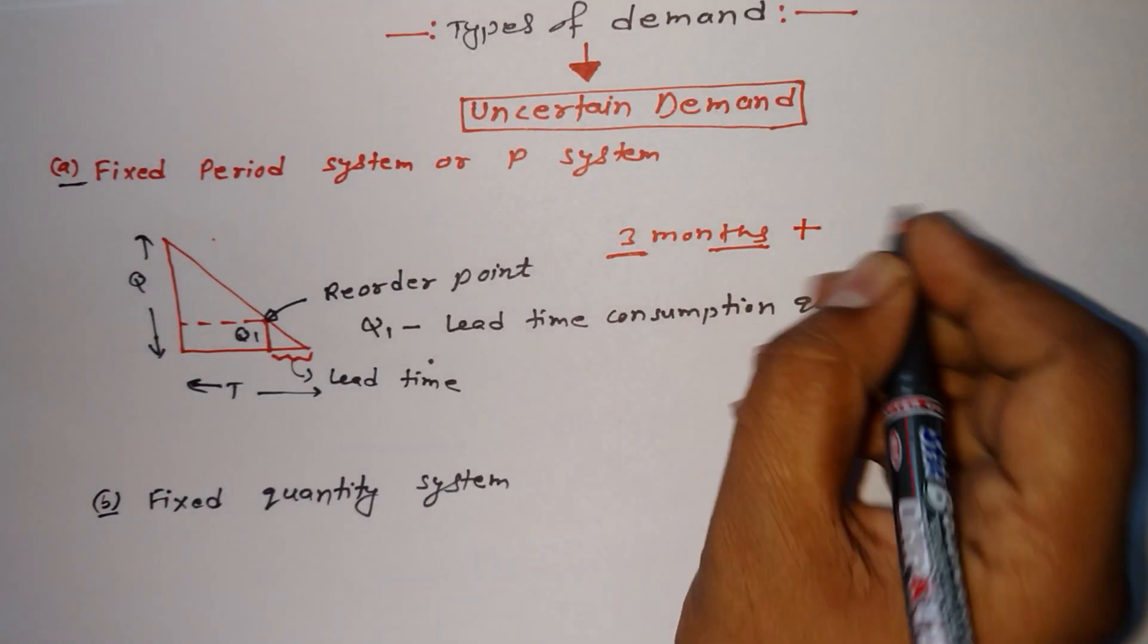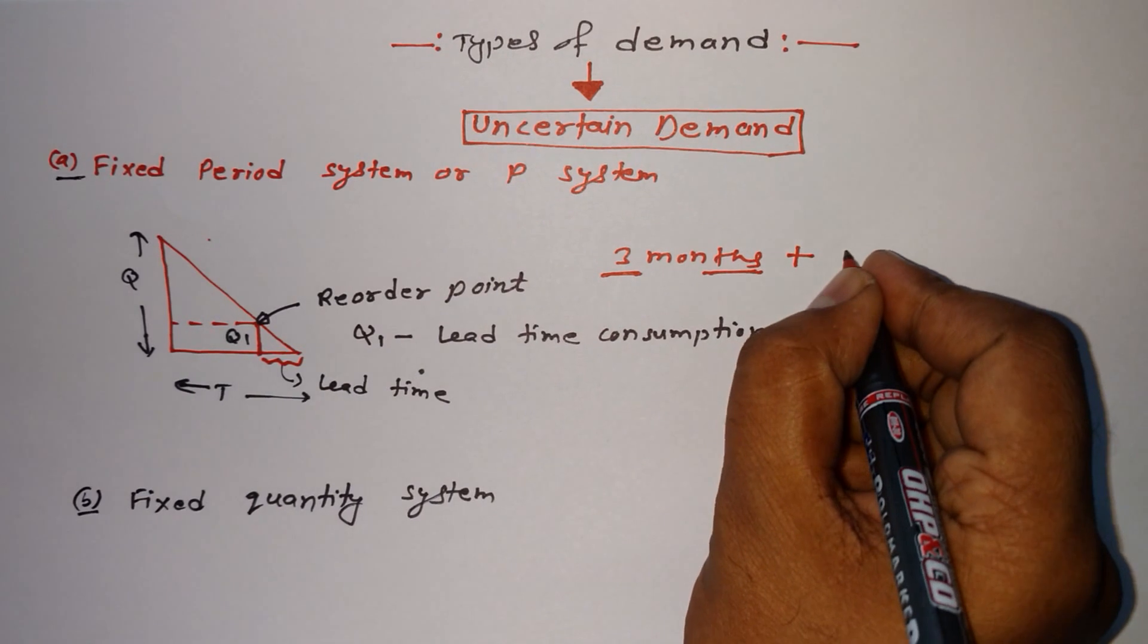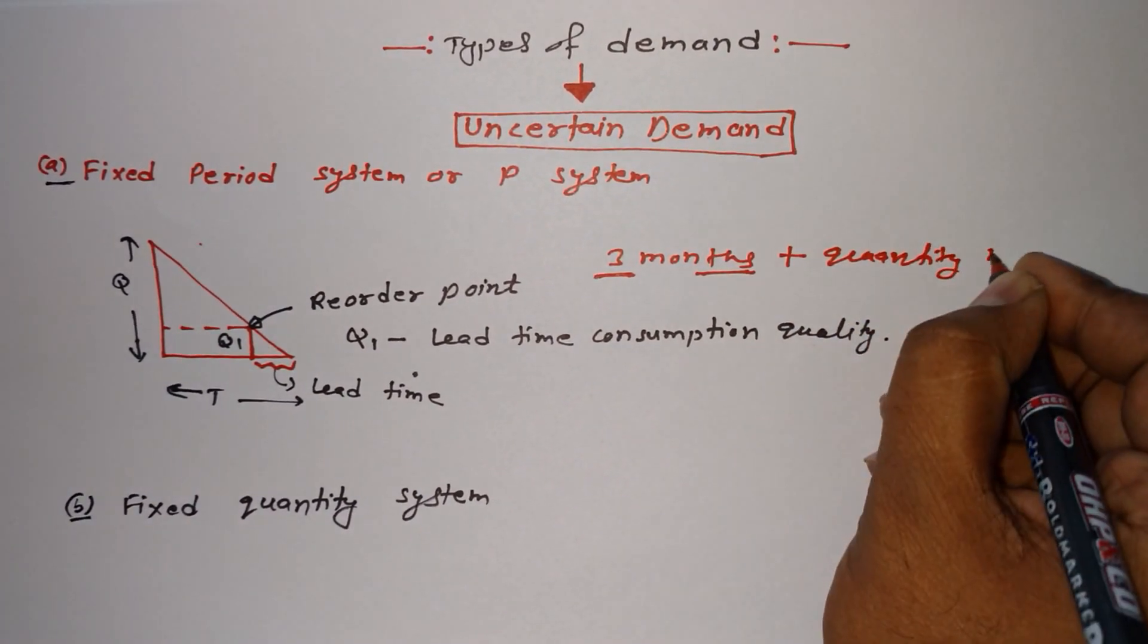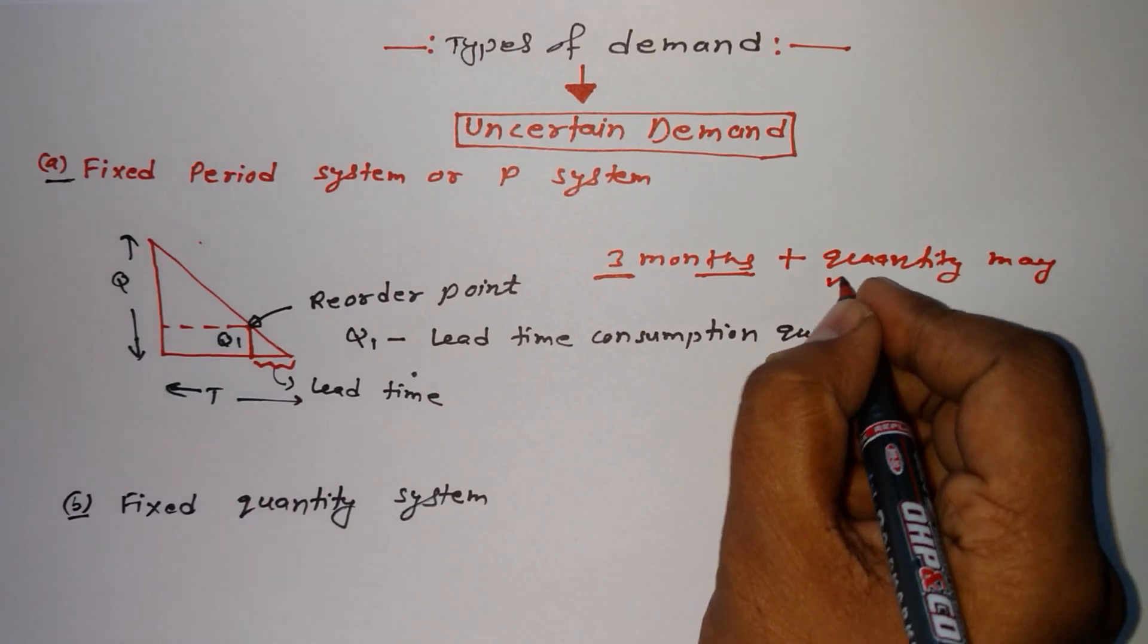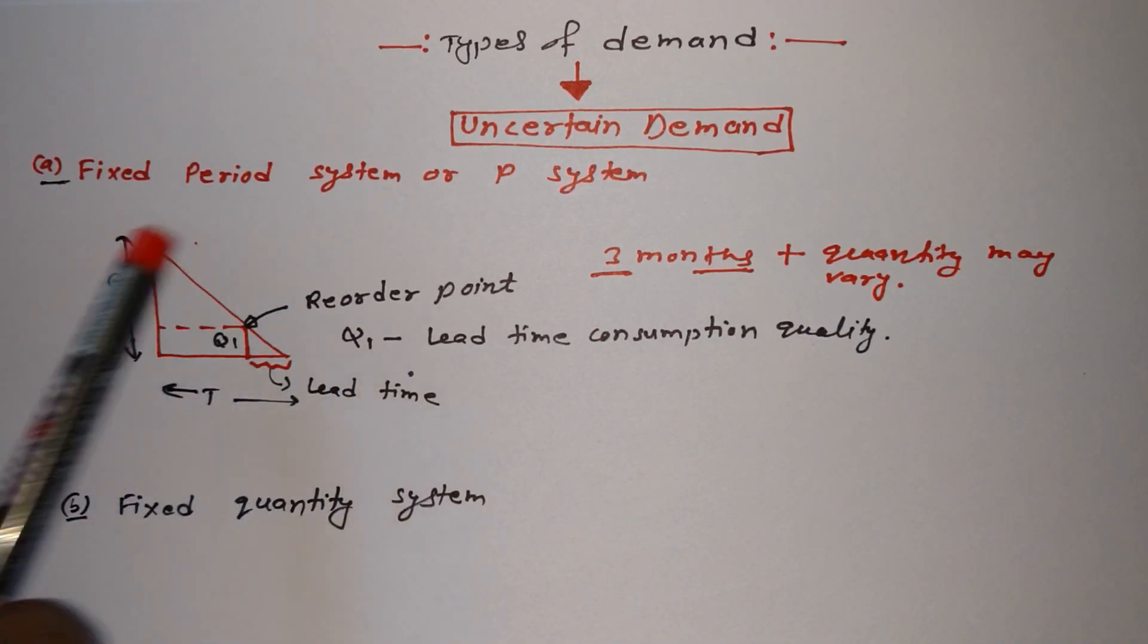But one thing we need to add here in this definition: quantity is not fixed, quantity may vary, but the period of time is fixed.